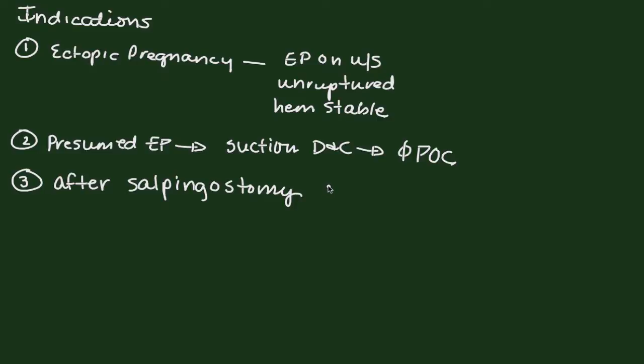And that's because 20% or less of the time salpingostomy will not remove all of the ectopic pregnancy tissue and there will be persistent trophoblasts. Now, whether those trophoblasts continue to proliferate or not is actually a reasonably rare situation, but it is recommended that after salpingostomy beta-HCG be followed postoperatively until they are zero.